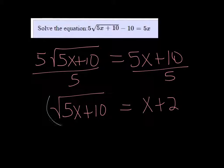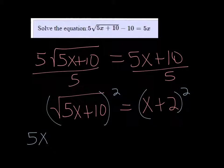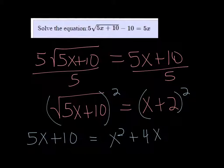So if I square both sides, I'm going to get just 5x plus 10 on the left, and on the right I'm going to get x squared plus 4x plus 4, once it's all foiled out.